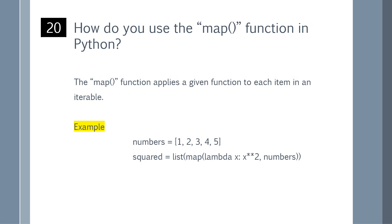How do you use the map function in Python? The map function applies a given function to each item in an iterable. You can refer to the example shown on the screen.